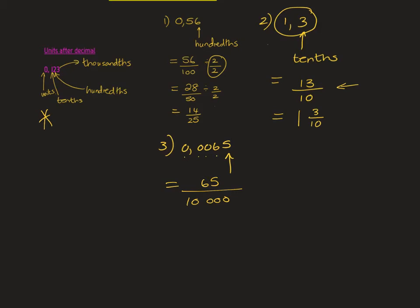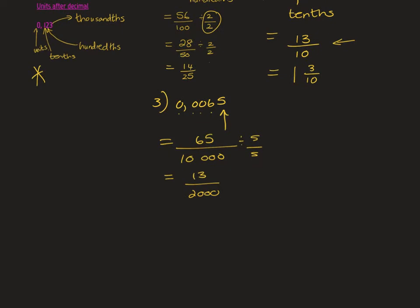Now think of a number that can fit into both 65 and 10,000. Since 65 ends in a five, you try dividing by five. 65 divided by 5 is 13, and 10,000 divided by 5 is 2,000. So your answer is 13 over 2,000, and that's how you leave your answer.